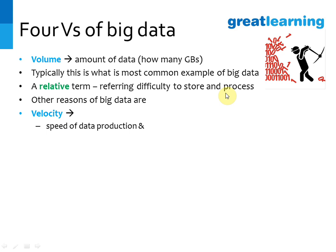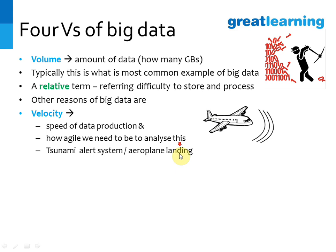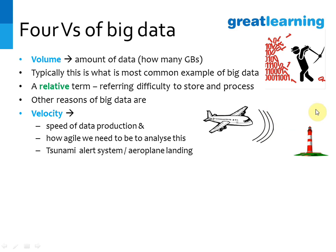Another reason for big data is velocity — with what speed data is getting produced and how agile you need to be to analyze it. For example, consider a tsunami alert or an aeroplane landing: you have a lot of information coming in and you need to process it very fast because it will affect how the aeroplane lands. Think of many aeroplanes all generating a lot of data with a lot of velocity.